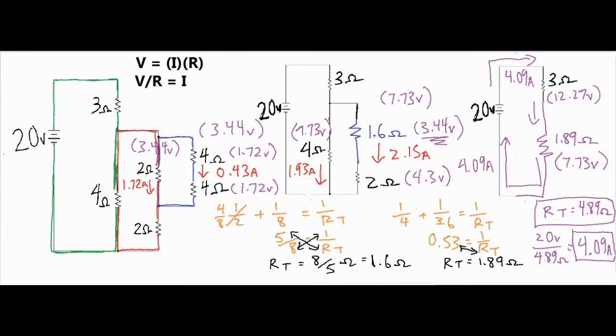And because of some rounding it's slightly different than this 4.09 amps of our total current, but what you can do is sort of backtrack and double check some of your work to see if you did all the math correctly. In fact, the first time I did this I did make a mistake and that helped me catch my mistake, and then I went back and I found where my error was and I corrected it.